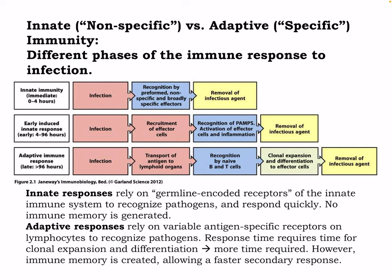However, immune memory is created in the adaptive response, allowing a faster secondary response. As most of you know, you catch a cold one time and the next time you might not even get it. This is the principle behind COVID herd immunity and vaccines, which we'll get into later.